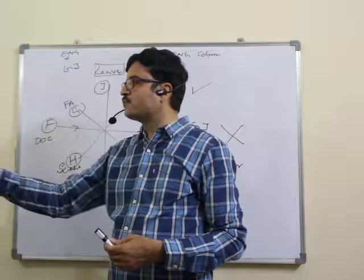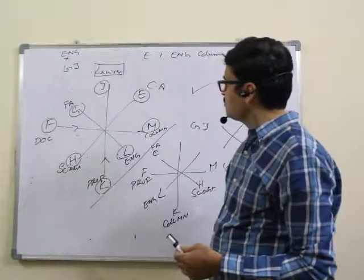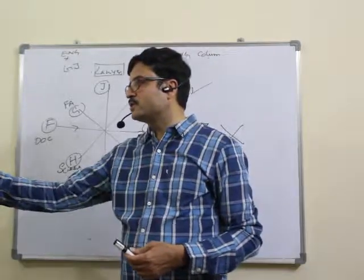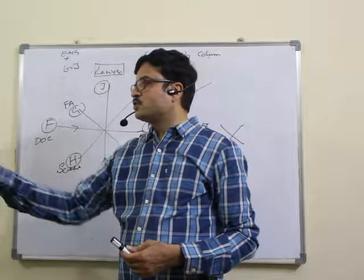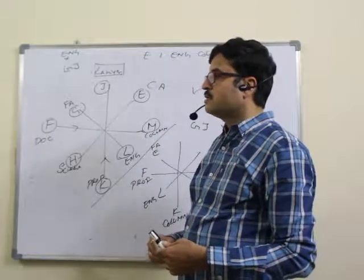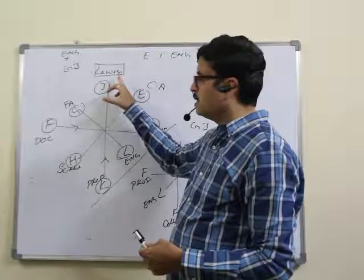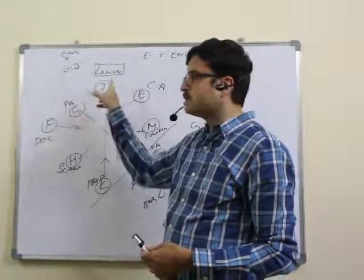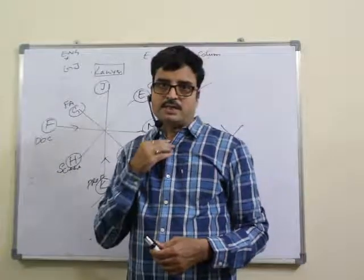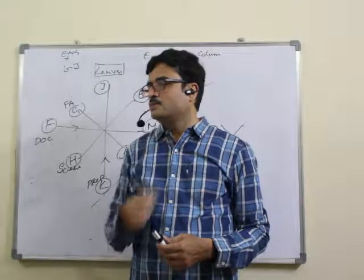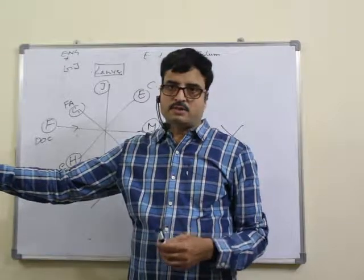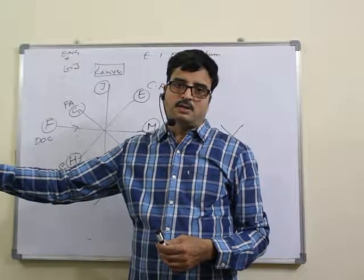Question 64: what is the position of L with respect to the scientist? Second to the right. Answer: 64, second option. Question 65: which statement is correct? The lawyer is second to the left of doctor — yes, that is correct. Answer: 65, first option. Thank you very much. In the next session we will be discussing other varieties of models.